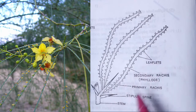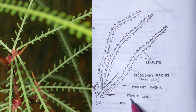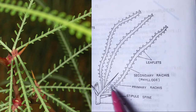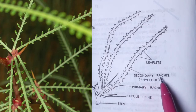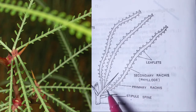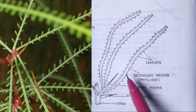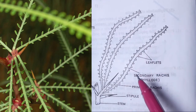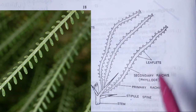In the case of Parkinsonia, this is the stem. It consists of a stipule spine. It consists of two types of rachis: the first is the primary rachis, which also gets converted into the form of a spine. However, the secondary rachis gets converted into elongated flat green photosynthetic phyllode that bears leaflets, which will fall off soon.